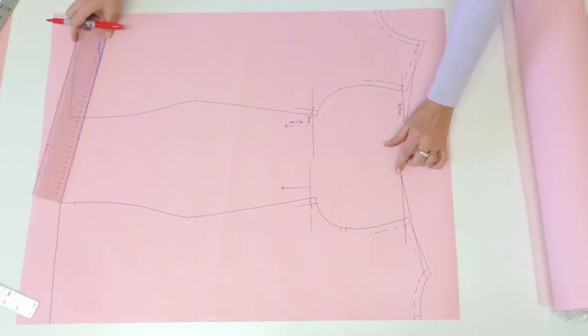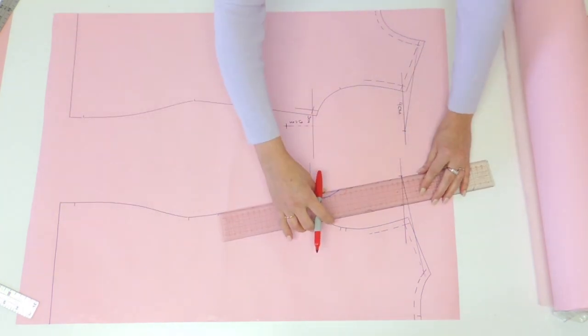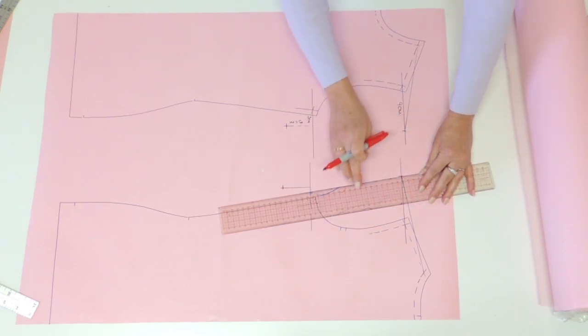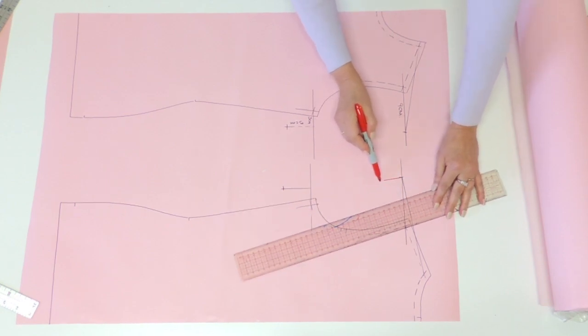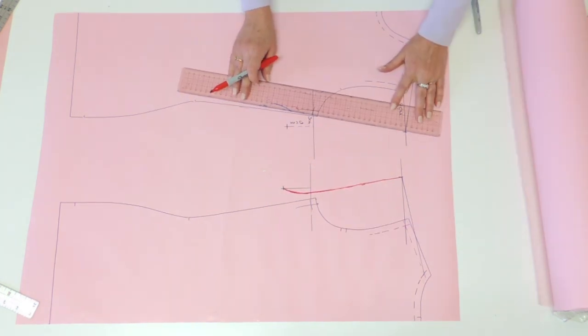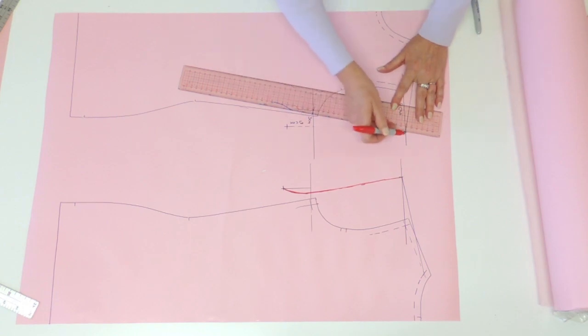Now I'm ready to trace my new armhole. The only thing you should do is trace a little bit of a 90 degree from your shoulder line and the rest is done by eye with the deepest part of the curve at the underarm. Same thing on the front, a little bit of a 90 degree.